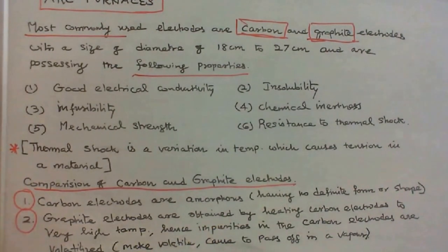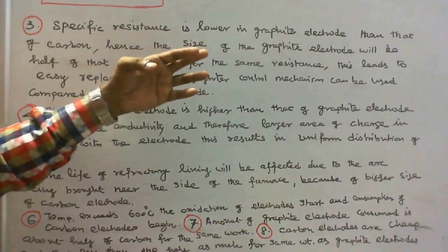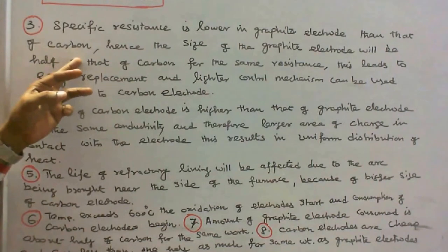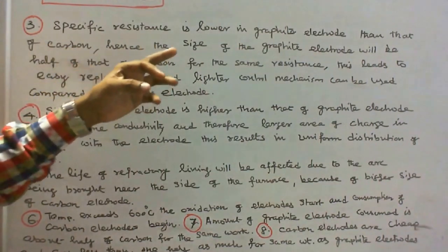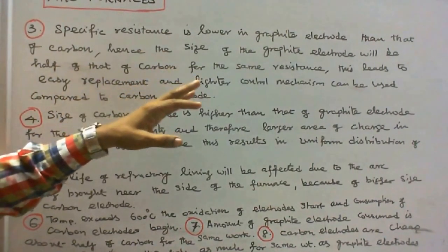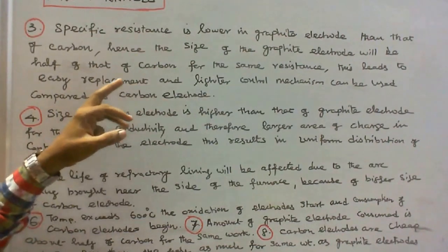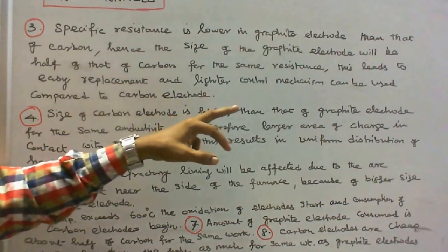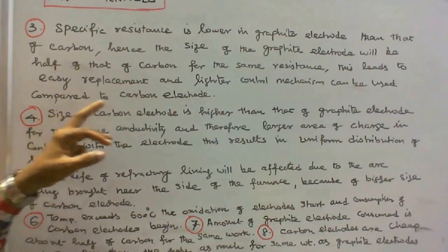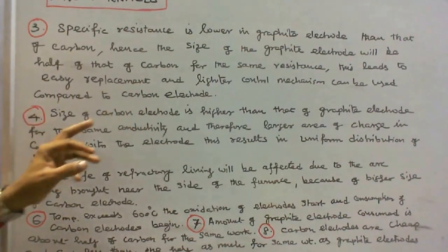Number three: specific resistance is lower in graphite electrode than that of carbon. Hence the size of the graphite electrode will be half of that of carbon for the same resistance. This leads to easy replacement and lighter control mechanism can be used compared to carbon electrodes.